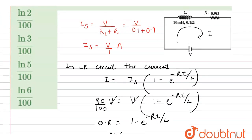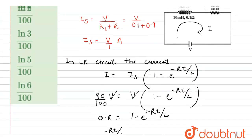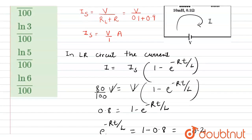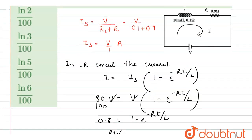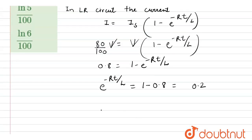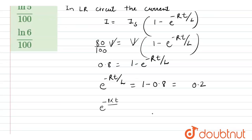Now substituting the values: the resistance is 0.1 + 0.9 = 1 Ω (net resistance = 1) and L = 10 mH = 10 × 10^(-3) H. So we get: e^(-(1/0.01)t) = e^(-100t) = 0.2.